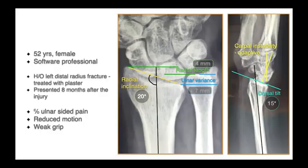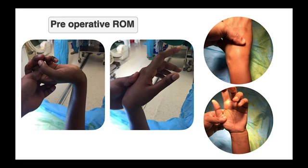The patient shown in the surgical technique video is a 52-year-old female who is a software professional who sustained a distal radius fracture on the left side treated with a plaster cast. She presented to us 8 months after the injury with complaints of ulnar-sided wrist pain, reduced motion, and weakness in grip. These are her radiographic parameters and she also had an adaptive type of carpal instability. Preoperative range of motion assessment showed deficiencies in flexion and supination.